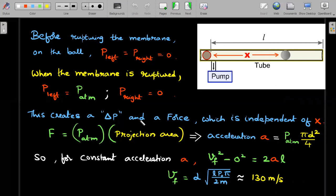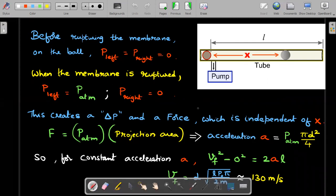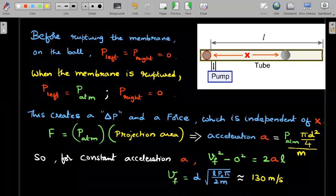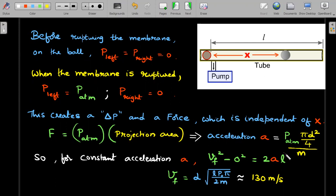So the value of that force is simply P atmosphere on this side multiplied by the projection area of this particular bullet. Projection area is pi r square, r is d by two diameter by two. So the value of that acceleration comes out to be equal to P atmosphere into this area divided by the mass m of the ball. So once the acceleration is known for this particular value of that constant acceleration that you have calculated, you can use the kinematics equation of v square minus u square is equal to twice the acceleration into displacement.